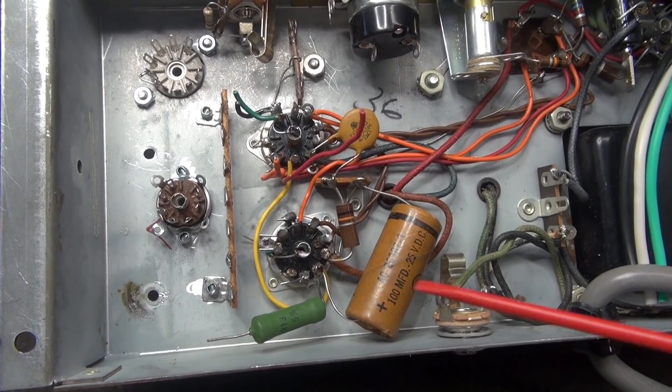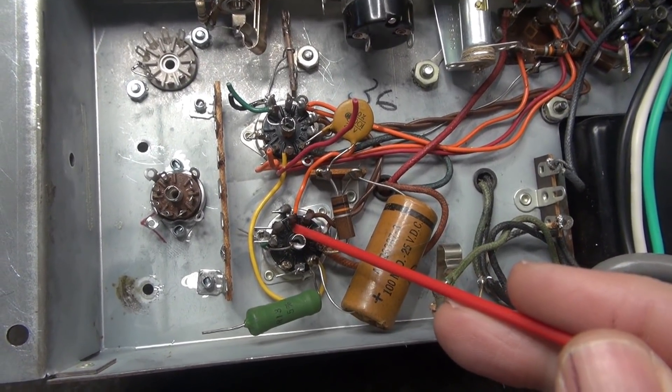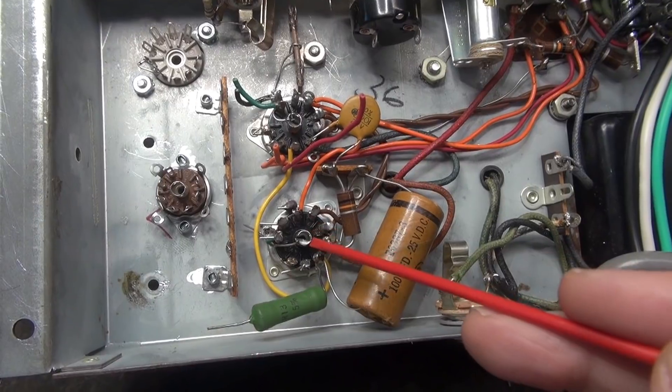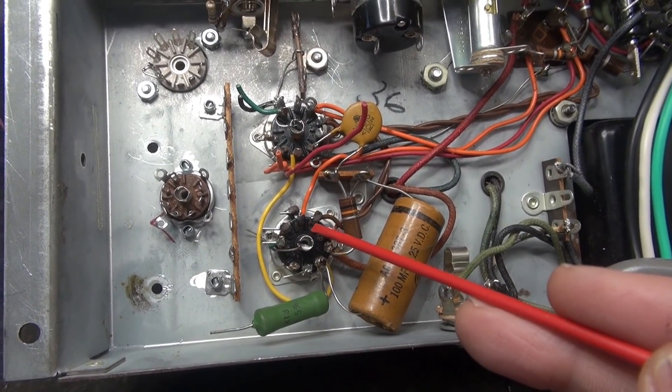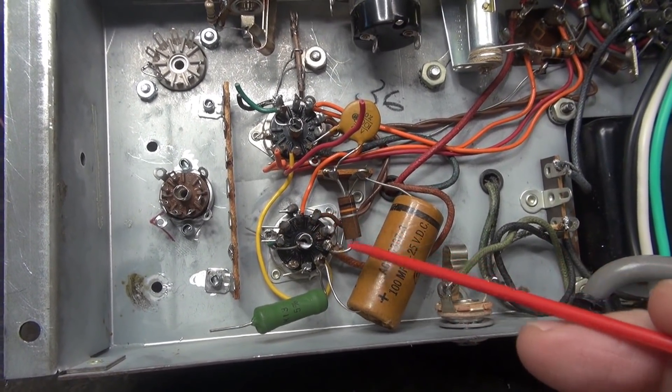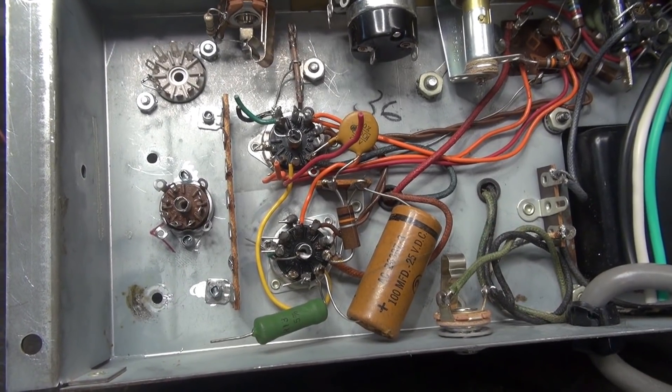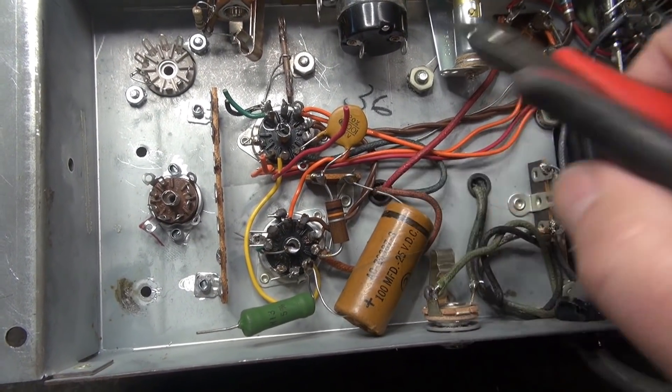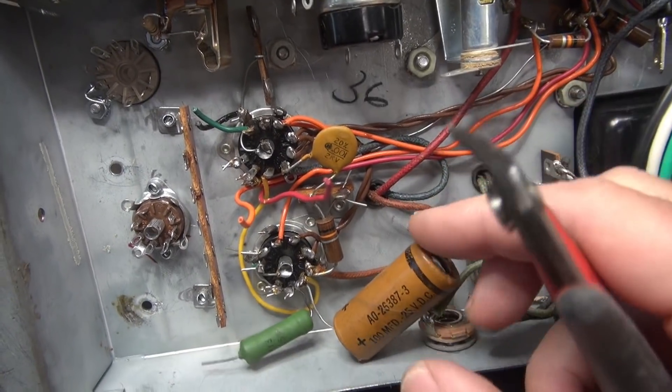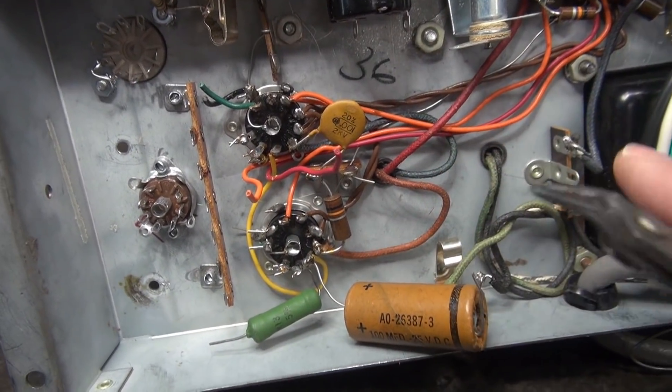To perform this conversion, the pinout of the tube socket bases are different from the 6GW8 to the 6BQ5. So I'm going to get in here and carve out some of the components that are in my way. I'm going to reconfigure these bases.